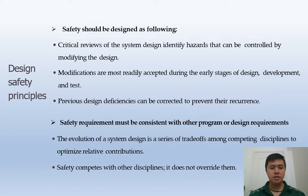Design safety principles state that safety should be designed in as follows: First, critical reviews of the system design identify hazards that can be controlled by modifying the design. Second, modifications are most readily accepted during the early stage of design development and testing. Third, previous design deficiencies can be corrected to prevent their recurrence. However, safety requirements must be consistent with other program or design requirements.